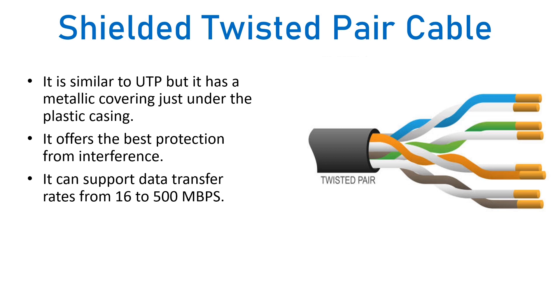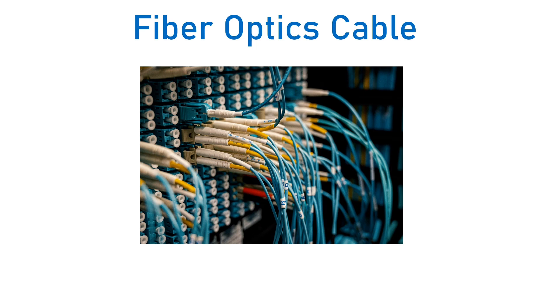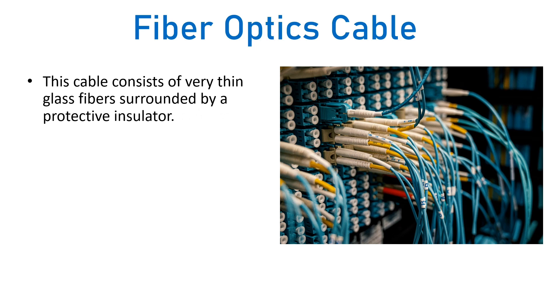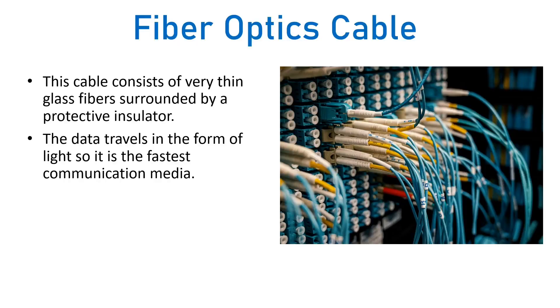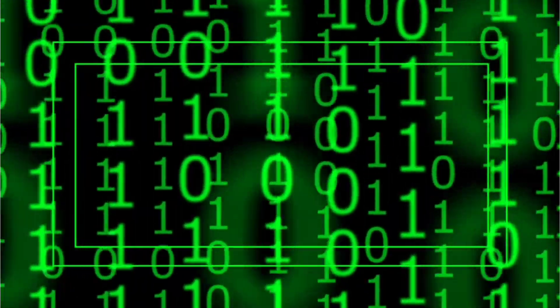Fiber optics cable is the fastest transmission media among all types. This cable consists of very thin glass fiber surrounded by a protective insulator, and data travels in the form of light. In other media like coaxial or twisted pair cables, data travels as electrical signals, but in fiber optics it travels as light, making it the fastest. It can support a data transfer rate of 2 billion bits per second, enabling very fast communication.